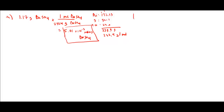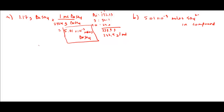Part B: calculate the amount in moles of sulfate in 0.982 grams of the compound. If we have 5.01 × 10⁻³ moles of barium sulfate, that means we have 5.01 × 10⁻³ moles of sulfate in the original compound that we dissolved — the total amount of sulfate hasn't changed whether we dissolved it or precipitated it. That's the answer to B.